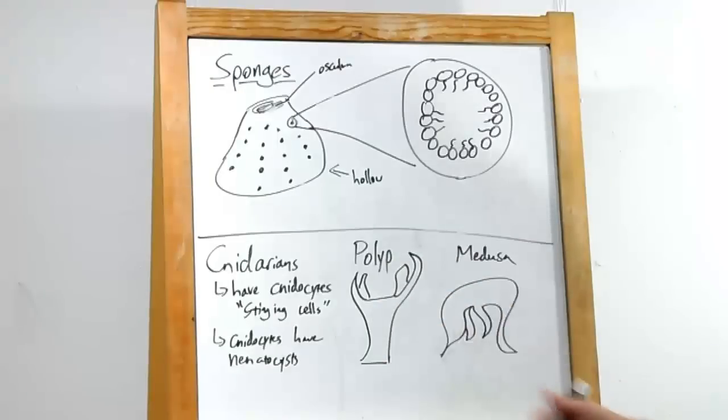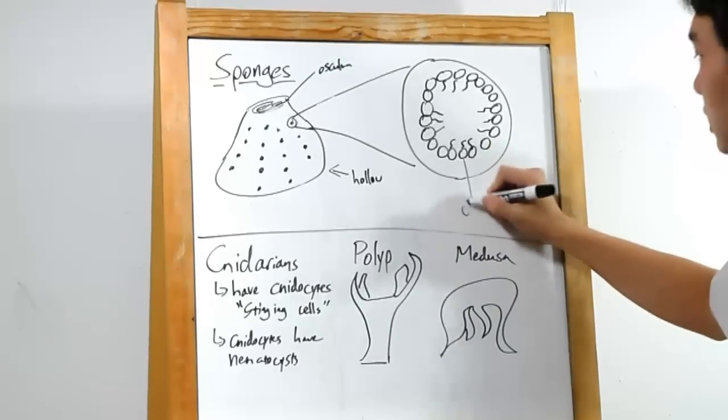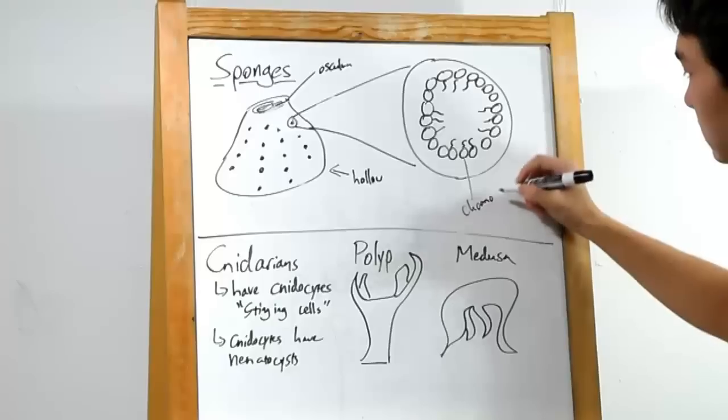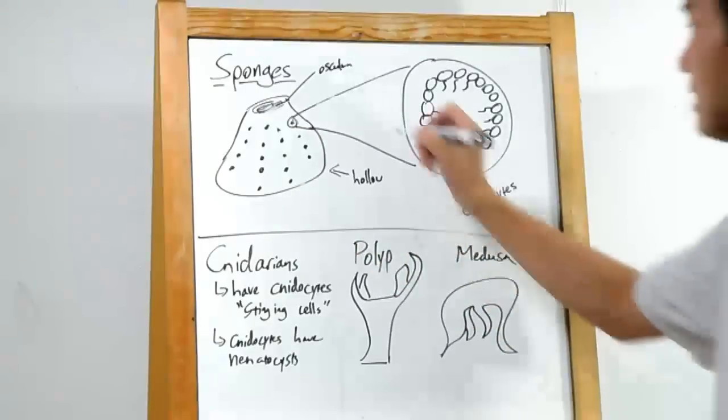Well, this all has to do with their pores. If you look really closely, you can find these very specialized cells called choanocytes. These have flagella, and what they'll do is beat their flagella in unison to start moving water into the sponge.